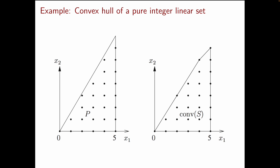We have an example of the convex hull of a pure integer linear set. On the left we have our pure integer linear set — the set of integer points satisfying a few linear inequality constraints: non-negativity on X1 and X2, the inequality X1 less than or equal to 5, and one other linear inequality. If we take the convex hull of all these integer points, we obtain the set on the right, which can be described with four linear inequality constraints: X2 greater than or equal to zero, X1 less than or equal to 5 — both present in the original description — plus two additional linear inequalities.